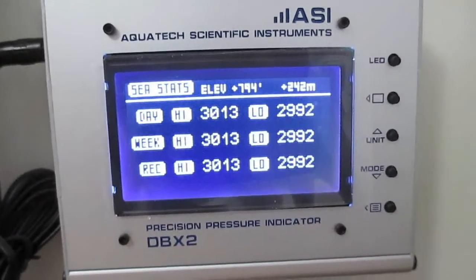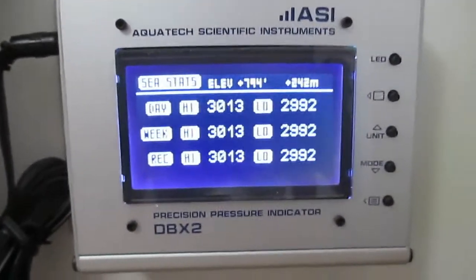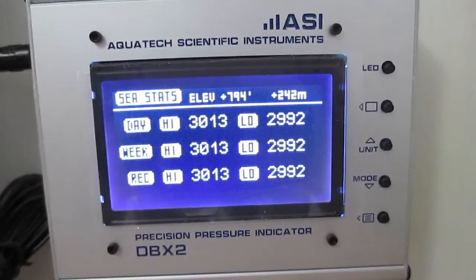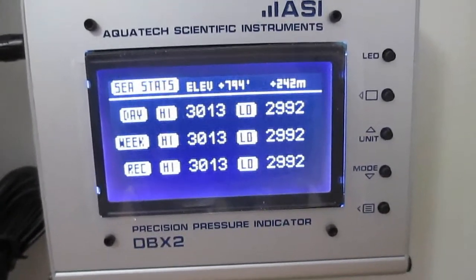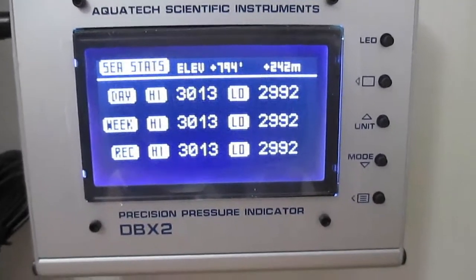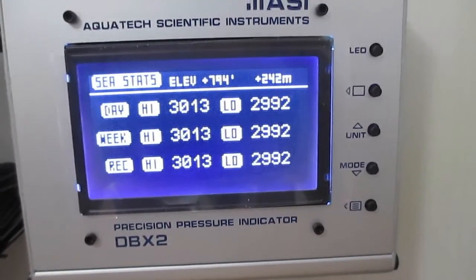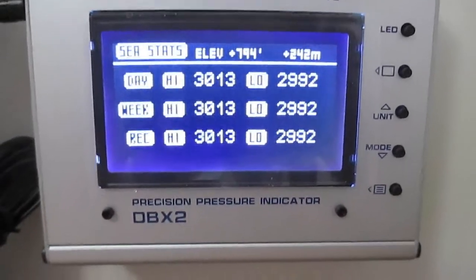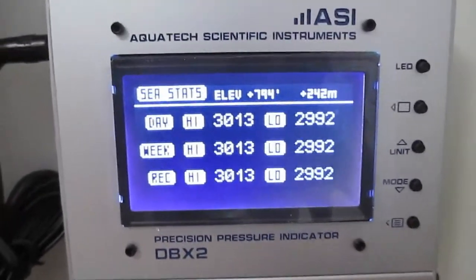Next one shows you numerically what the values are, the high and low for the day of the week and the all-time record high and low for the unit since it has been put into operation, along with the elevation of 794 feet.